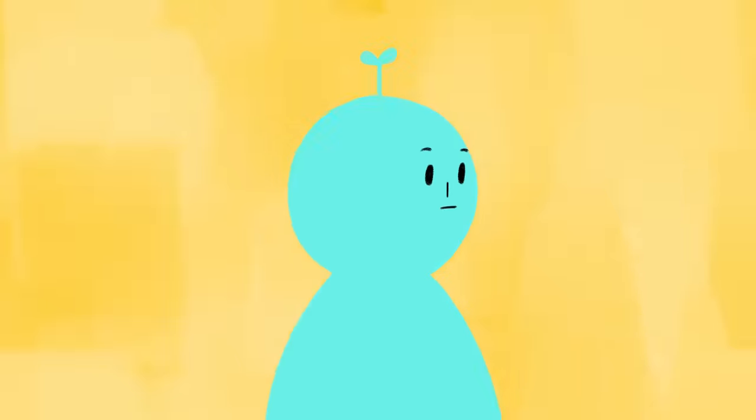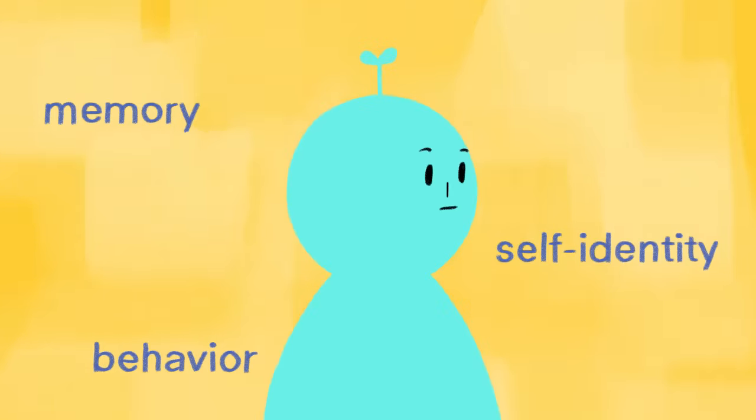People with this condition often have changes and lapses in memory, self-identity, and behavior that causes significant problems in their everyday lives. DID is defined as having at least two different mental states accompanied by significant changes in behavior and memory.